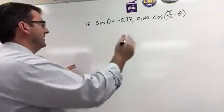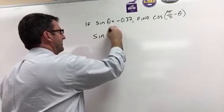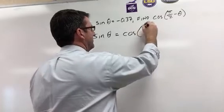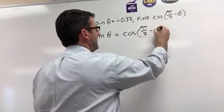And they all look something like this. Sine of theta is equal to cosine of pi over 2 minus theta.